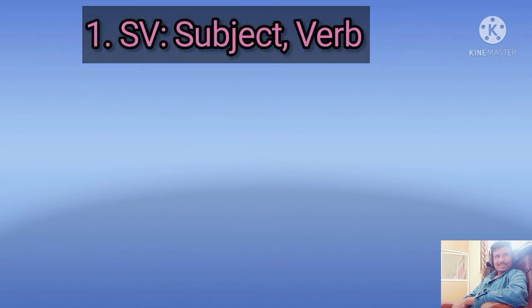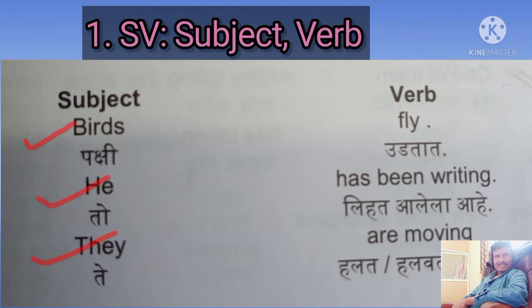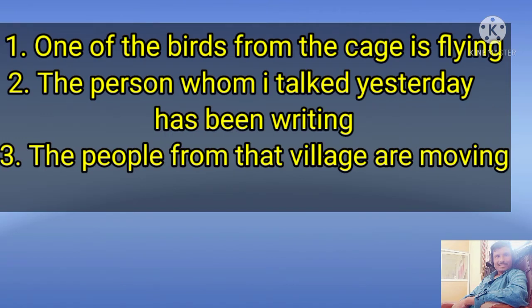Let us begin with the first and the shortest one, S-V, which is subject plus verb. A sentence formed with the help of a subject and a verb is S-V. Examples: 'Birds fly.' 'He has been writing.' 'They are moving.' Also: 'One of the birds from the cage is flying.' 'The person whom I talked yesterday has been writing.' 'The people from that village are moving.' There is only one subject and a verb in all these examples. I would suggest you prepare at least 25 sentences using this subject and verb combination.